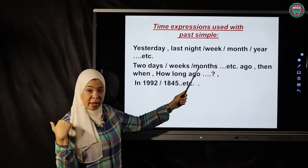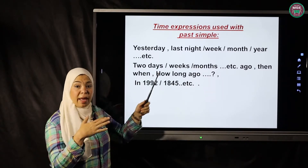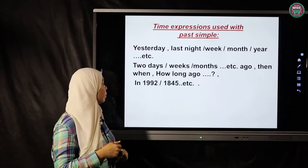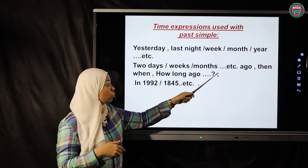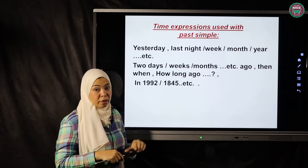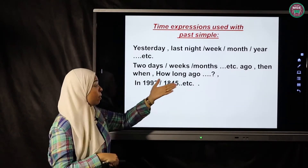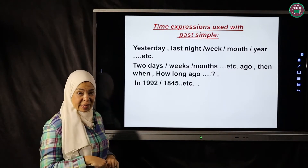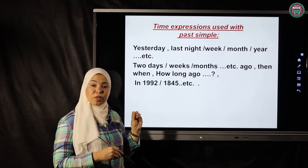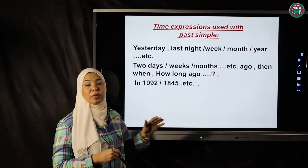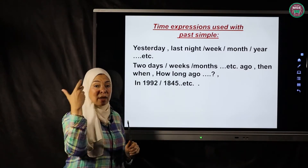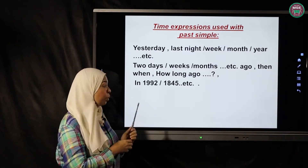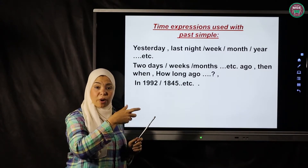The time expressions used with the past simple: 'yesterday', 'last night', 'last week', 'last month', 'last year' — anything related to the past. Also 'two days ago', 'two months ago', 'two weeks ago' — 'ago' is very important as it refers to a past state. 'When' and 'how long ago' differ from the present perfect. If I put 'ago', I'm referring to a past action. 'In 1992', 'in 1845' — 'in' plus a specific date refers to a past action.